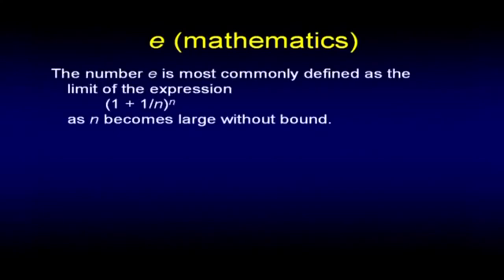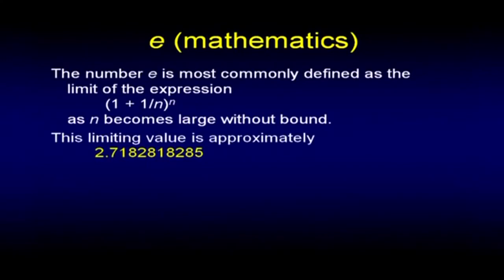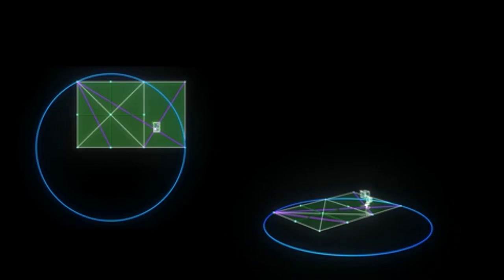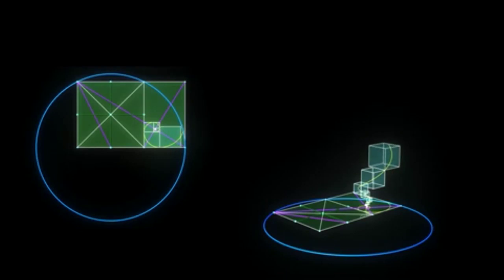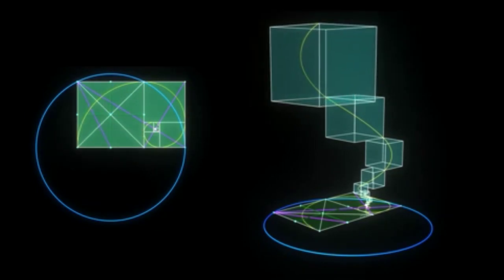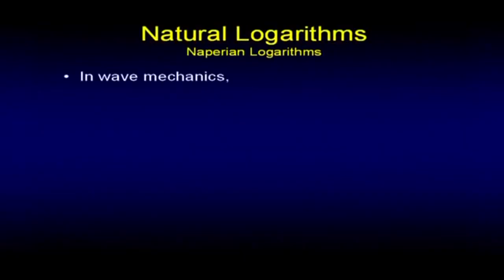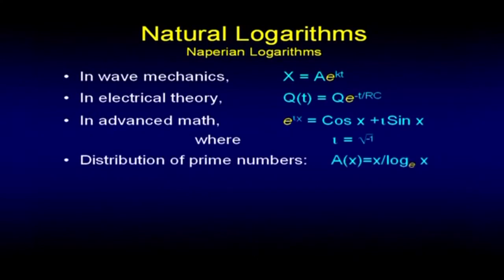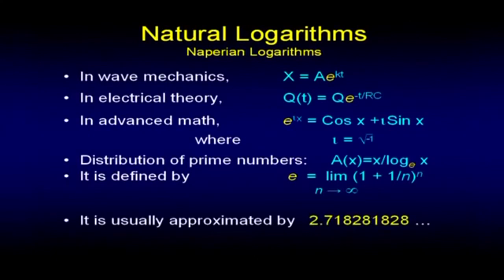E is a number very widely used in mathematics, defined by an expansion whose limiting value is about 2.718281828 and so on. E forms the base of natural or Napierian logarithms. What makes it so interesting is that in the exponential function e to the x, it's the only function having a rate of growth equal to its own size — in the language of calculus, the only function whose derivative equals itself. It is therefore the fundamental function for equations describing growth and many other processes of change, appearing in wave mechanics, electrical theory, advanced math, and the distribution of prime numbers.